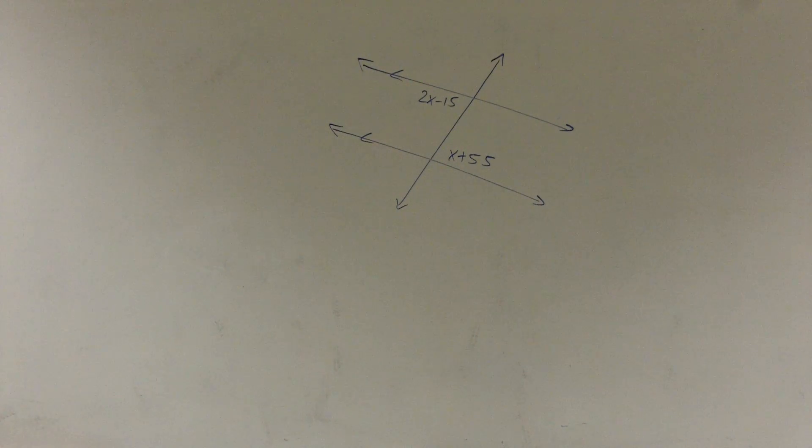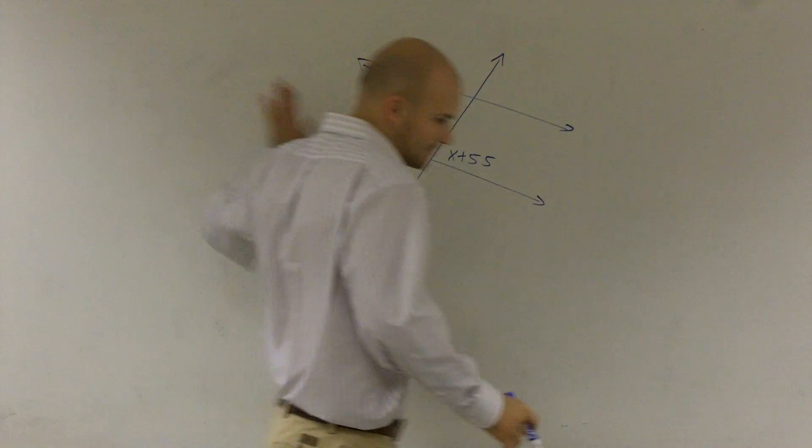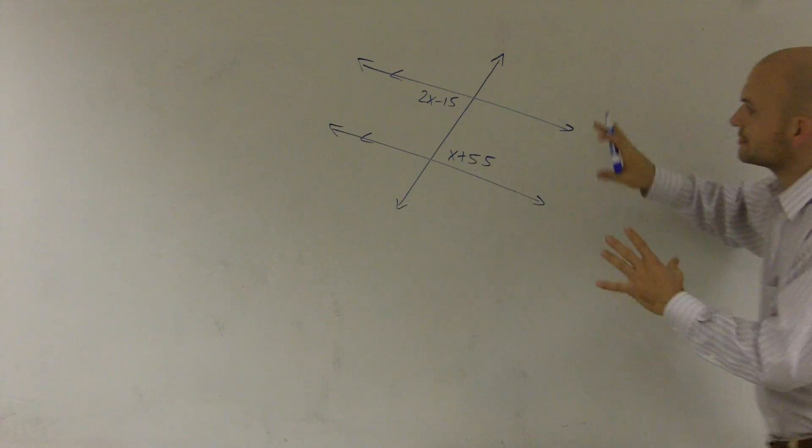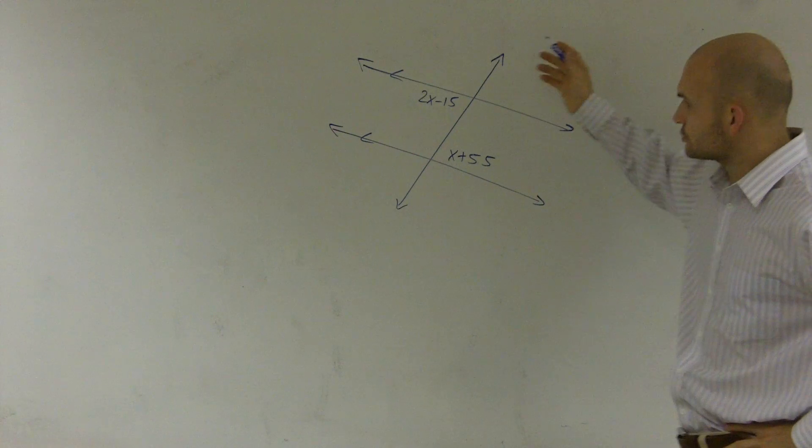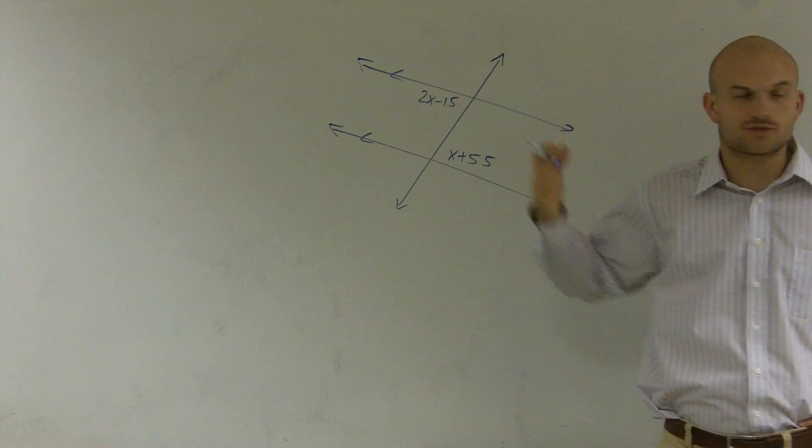OK. Time to listen up. What we have over here is we have two parallel lines, and we also have a transversal. The transversal is the line that's intersecting those two parallel lines.